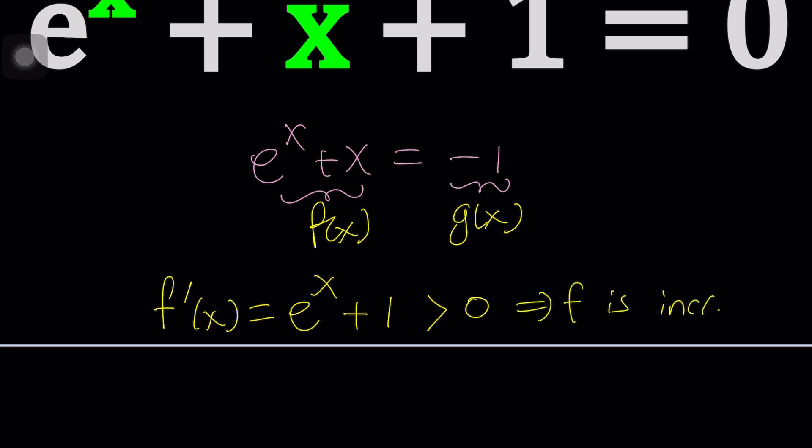And what is the big deal about increasing functions? Well, the right-hand side, G of X, equals negative 1. If you differentiate it, you're going to get 0. What does that mean? The rate of change of this function is 0, which means it doesn't change. It doesn't vary. No variables. It's a constant.